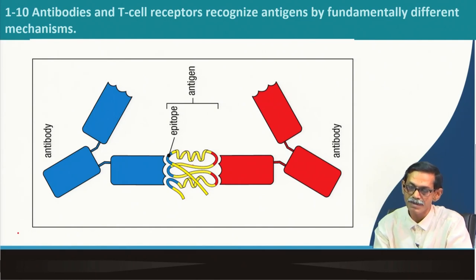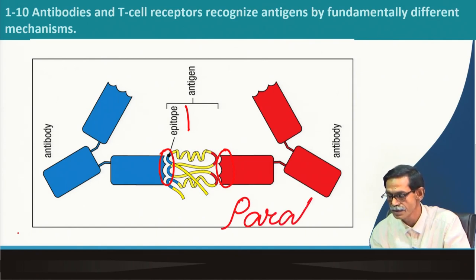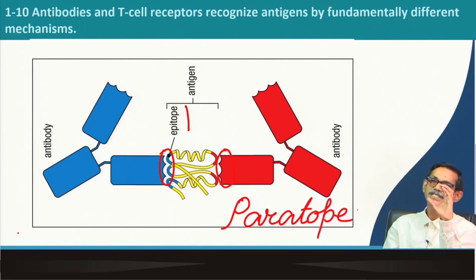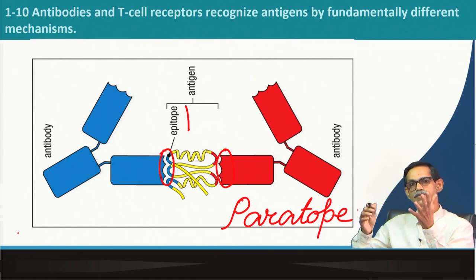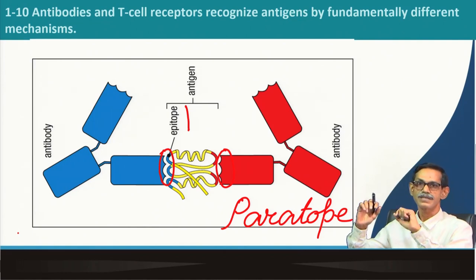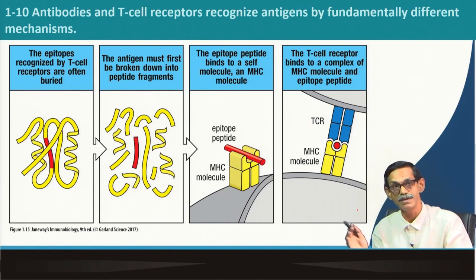The part of antigen which is recognized by the antibody is known as the epitope. The antigen binding site of the antibody is called the paratope, and the antigen part recognized by the antibody is the epitope. From this figure, you can understand that the whole protein is not interacting with the antibody — only small segments are interacting. But what is happening in the case of T cells is slightly — and importantly — different, which we will see later.